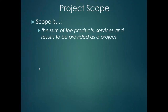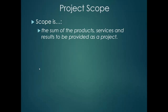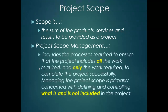What is scope? It's the sum of the products, services, and results to be provided as a project — a detailed description of the end product. For example: this project is going to involve building a three-bedroom house with two bathrooms, a double garage, and a swimming pool. The scope statement would also include a summary value — how much it's going to cost — and a time span or duration.